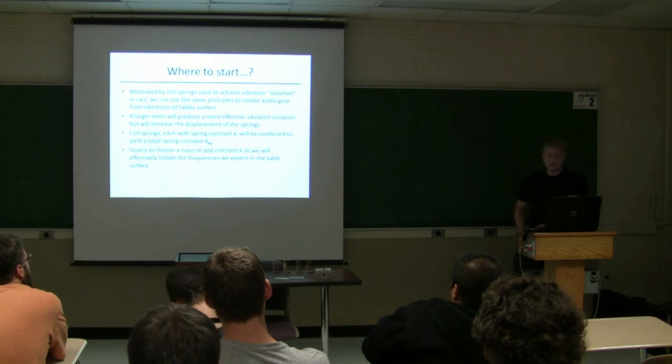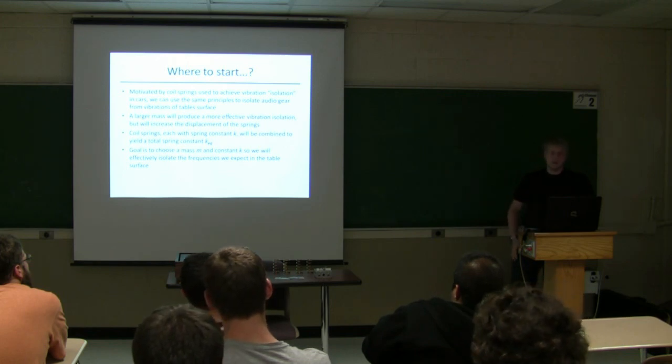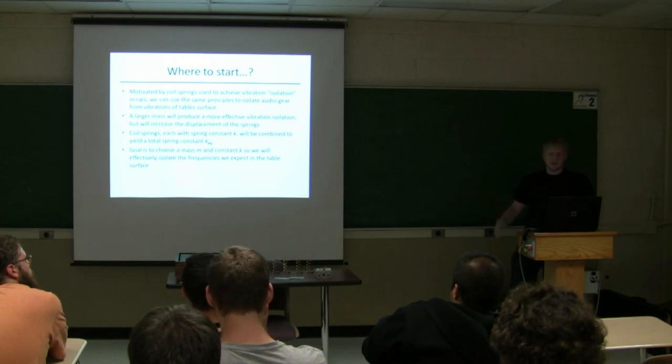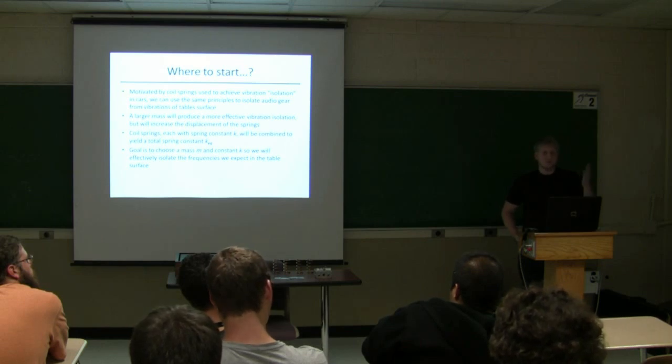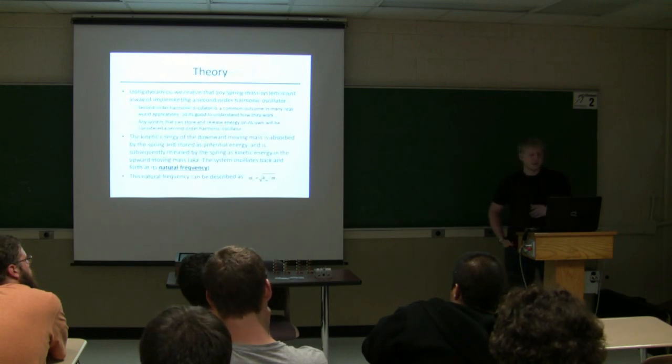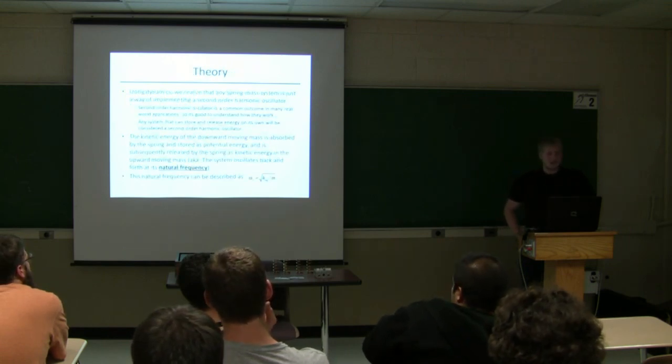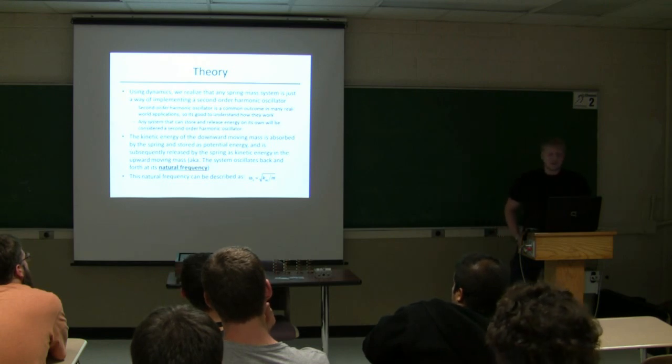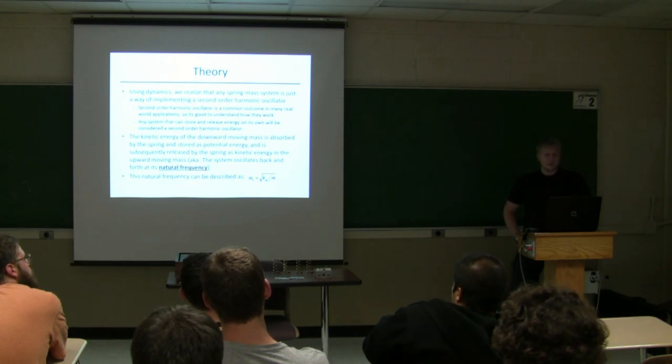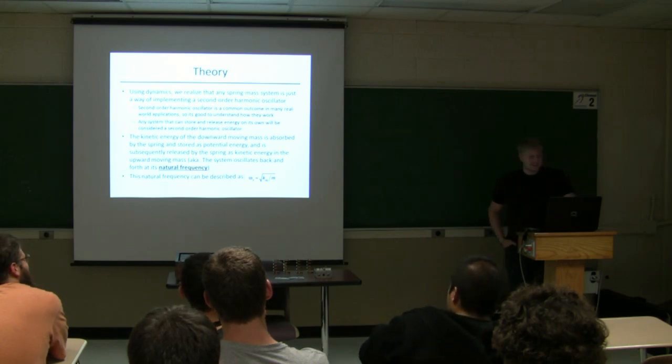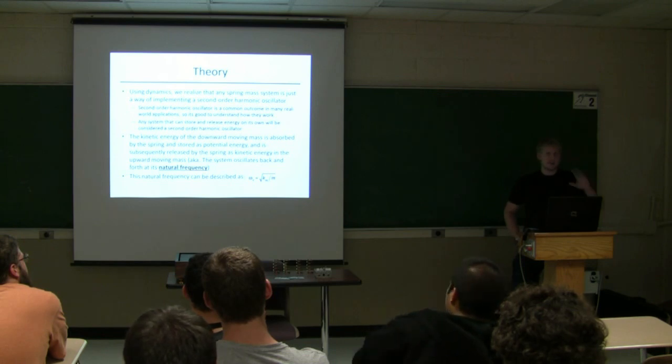And so the goal of this project would be choosing a mass M, which would be the mass of whatever you have sitting on top of the table, and a spring constant that you would look at online, there's websites, you can choose springs with various properties. You can choose a K, and with those together you can effectively isolate certain frequencies that you want to isolate your table from. So in dynamics, we realize that the spring mass system is just a way of applying a second order harmonic oscillator. And a second order harmonic oscillator is just a differential equation, which we don't need to go over tonight. This is not what we want to do. But basically it's any system that can store and release energy on its own without applying external forces.